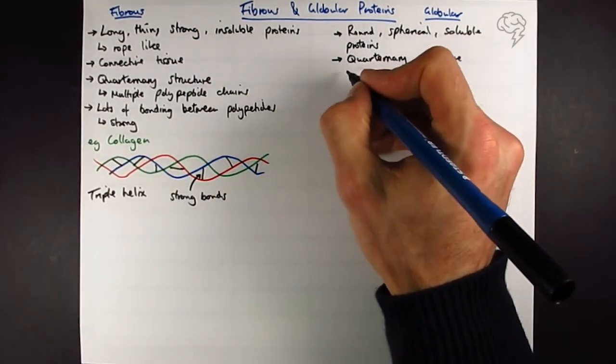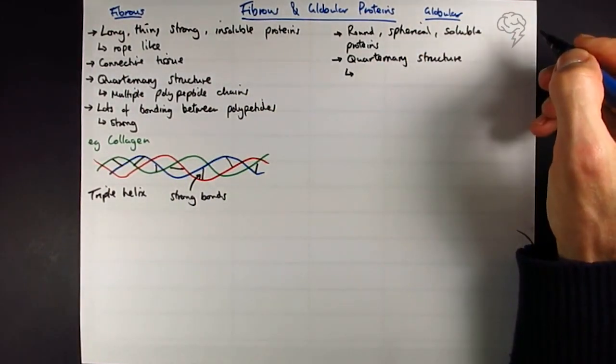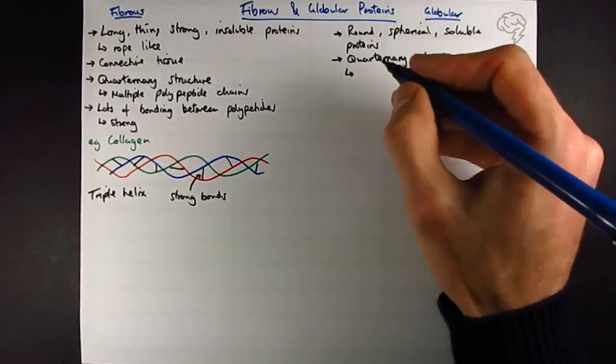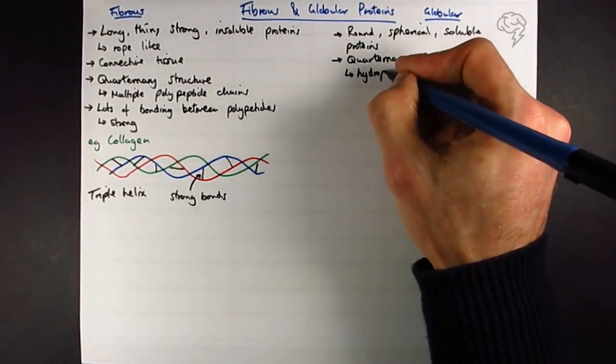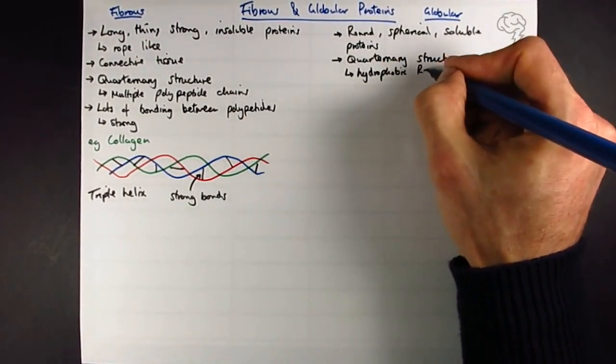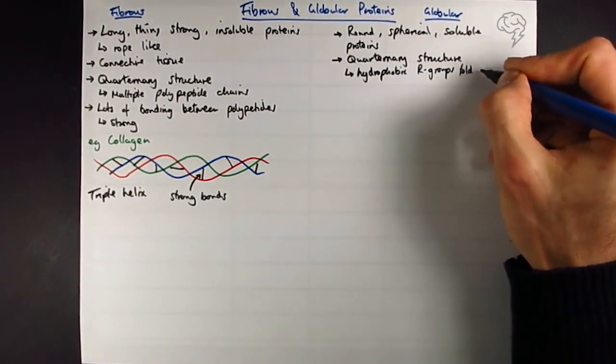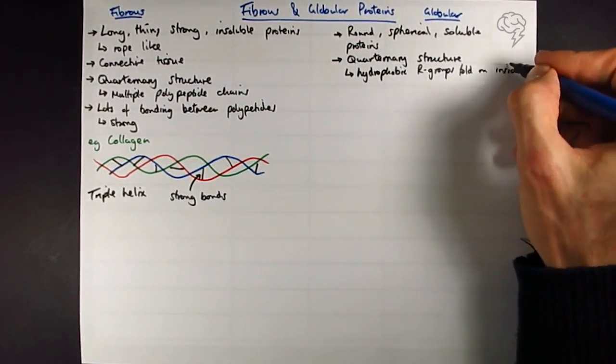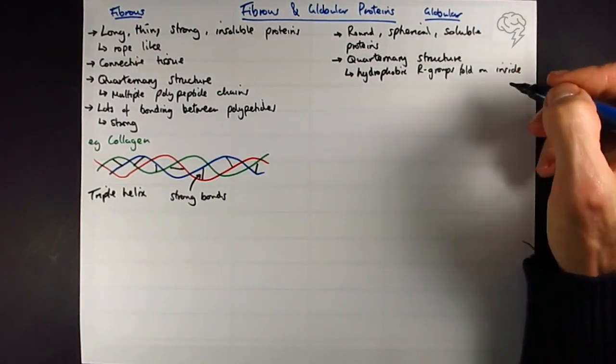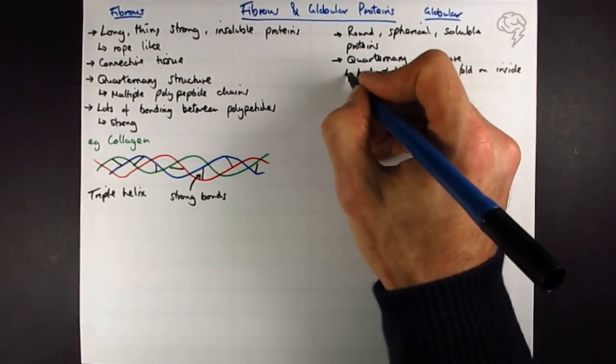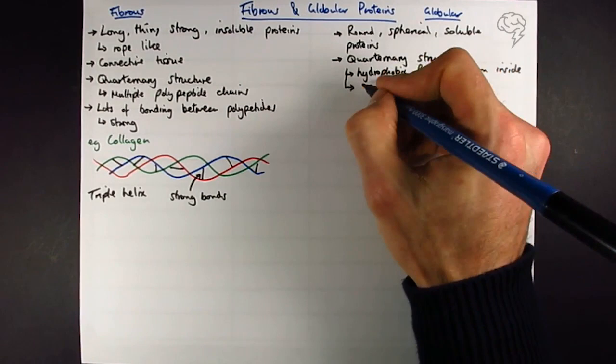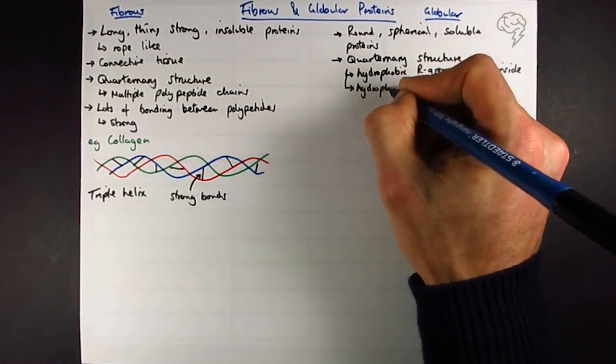This relates to why they're soluble. You have the hydrophobic R groups, the side chains, the hydrophobic bits that are afraid of water are going to hide on the inside. So when the protein folds up, the R groups that are hydrophobic are going to be on the inside, and the hydrophilic R groups are going to be on the outside.